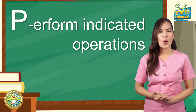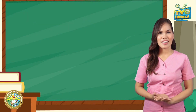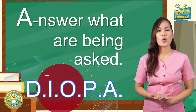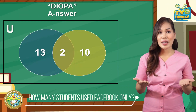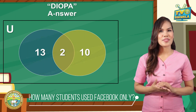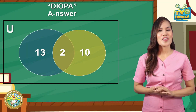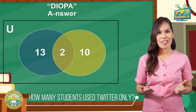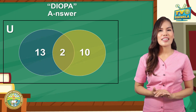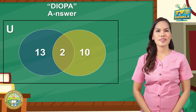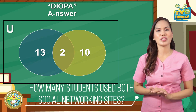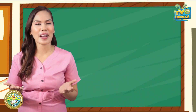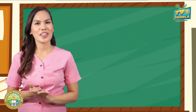Next is P — perform the indicated operations. Finally, the last letter of the acronym DEUPA is A — answer what are being asked. How many students used Facebook only? 13 students. How many students used Twitter only? 10 students. How many students used both social networking sites? 2 students. Did you arrive at the correct answer? Great job!